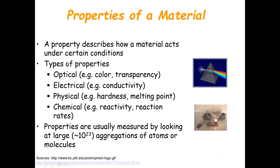What kinds of properties do we have? The most well-known types are optical properties, including color and transparency. We have electrical properties — good examples are conductivity and resistivity. Physical properties include hardness and melting point. Chemical properties include reactivity and reaction rate. We study properties by looking at large aggregations of atoms or molecules; at nanotechnology, we are studying aggregates of atoms or molecules.